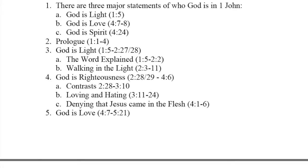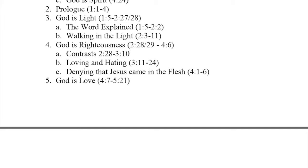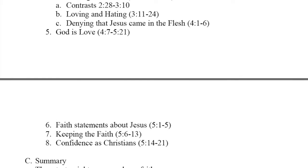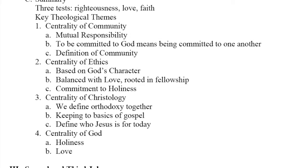Regarding the structure: there are three main statements of who God is in 1 John — God is light, God is love, and God is spirit. The letter begins with a prologue and then moves into the topic 'God is light.' The word is explained and readers are called to walk in the light as God is in the light. God is righteousness, meaning those who believe in God should walk in righteousness and not live in sin. To deny that Jesus came in the flesh is to deny who God is. Next, God is love. There are faith statements about Jesus in chapter 5, verses 1 to 5 — keeping the faith and then confidence as Christians. A summary: there are three tests in this document — righteousness, love, and faith.